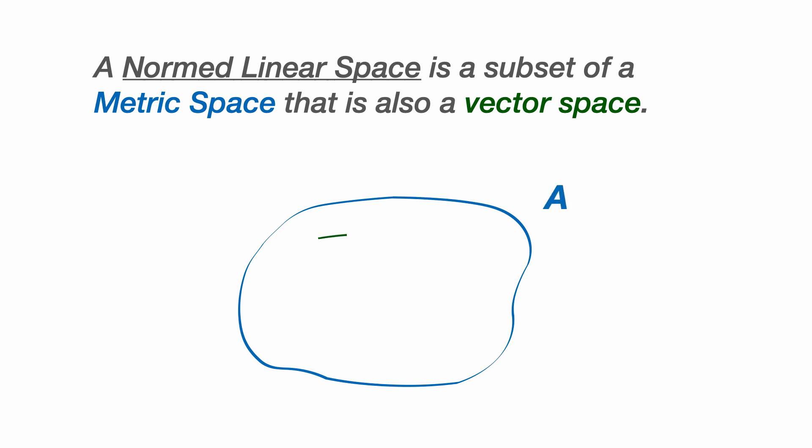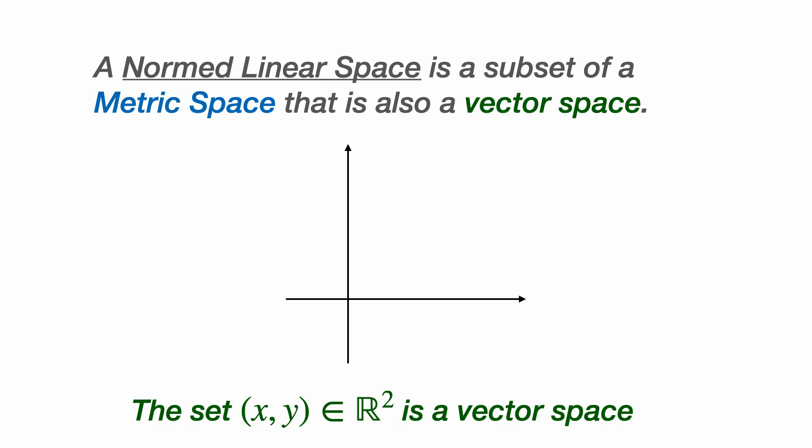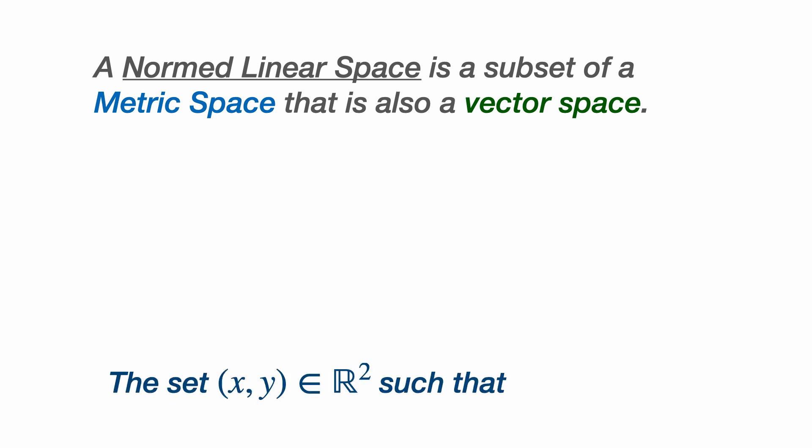To produce a normed linear space, we take a subset of a metric space that is also a vector space. Now there are some cases where the metric space itself is a vector space. For example, if we have the two dimensional plane, the set of x and y coordinates in R squared, with a suitable distance function, this could be a metric space and also a vector space, because any linear combination of points within this 2D plane is also within this set.